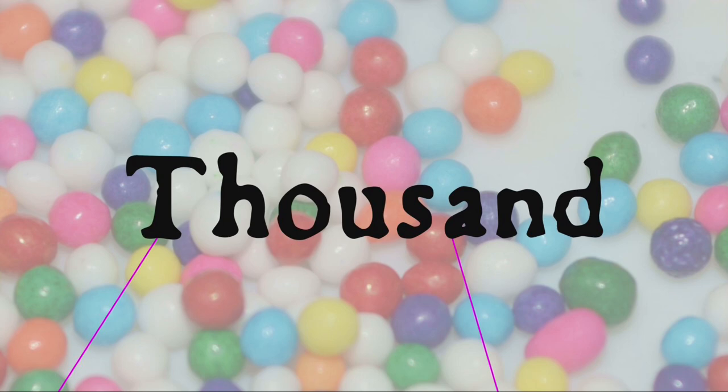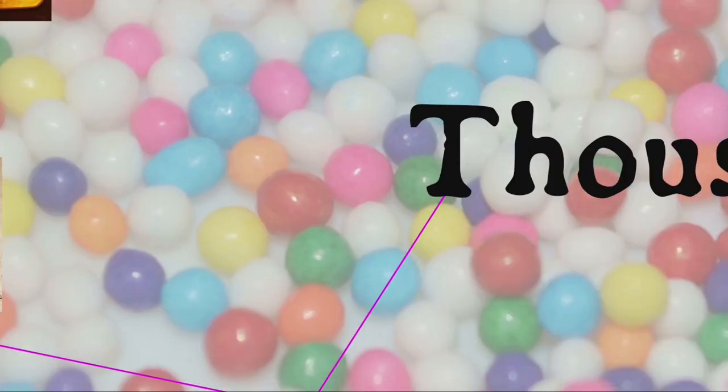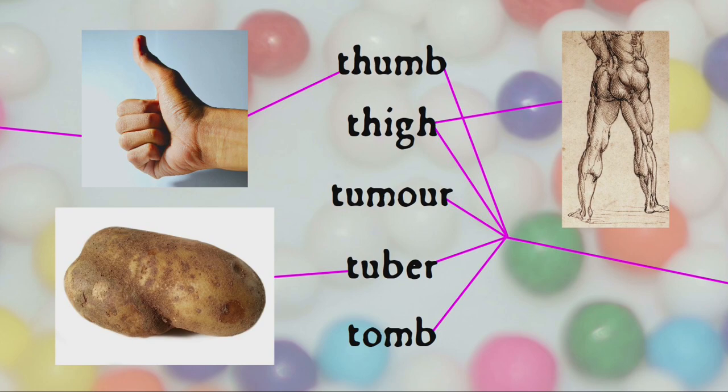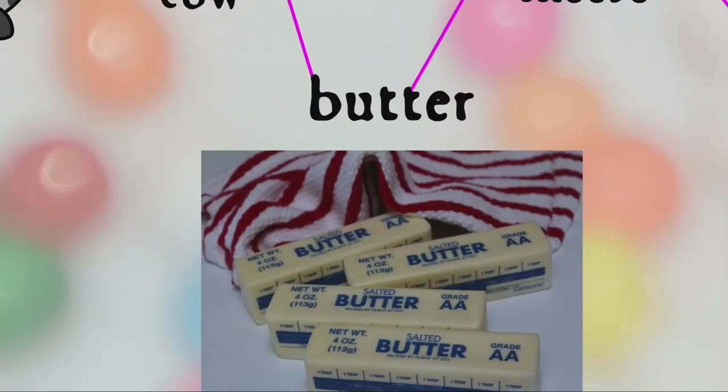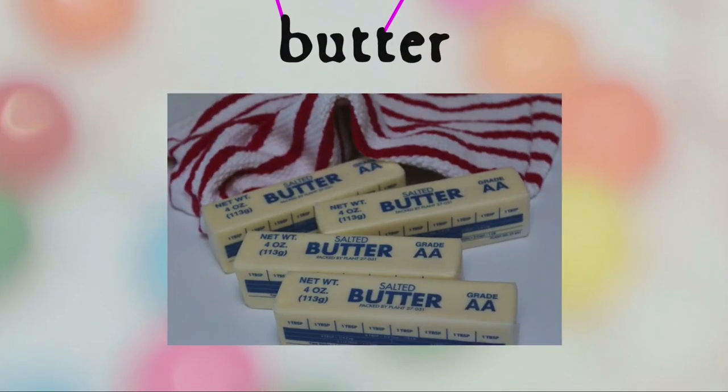That swelling root, by the way, also gives us words such as thumb, thigh, tumour, tuber, and tum, and the second element of butter.